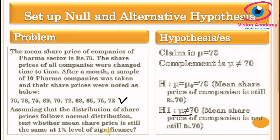Now we decide the appropriate test. We want to test the hypothesis regarding population mean (mu = 70 rupees), but population standard deviation is unknown. The sample size n equals 10, which is less than 30, and we are assuming the population follows a normal distribution. Therefore, the t-test is suitable for testing this hypothesis.